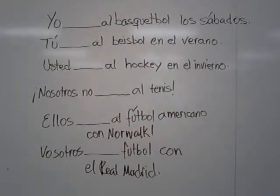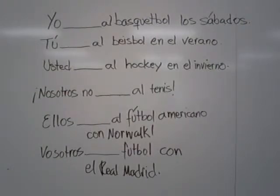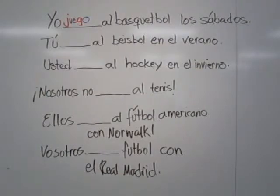Here are our sentences. Let's see if you can put in the correct verbs in each of these spaces. Get out your piece of paper and a pencil, fill in those spaces, and stop the video now, then you can check it in a few minutes. Welcome back. Let's take the first one: Yo juego al basketball los sábados — I play basketball on Saturdays. Notice it is inside the boot, so we have the UE change in the stem plus the regular O ending.